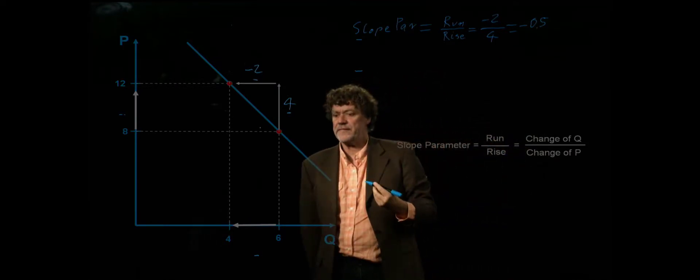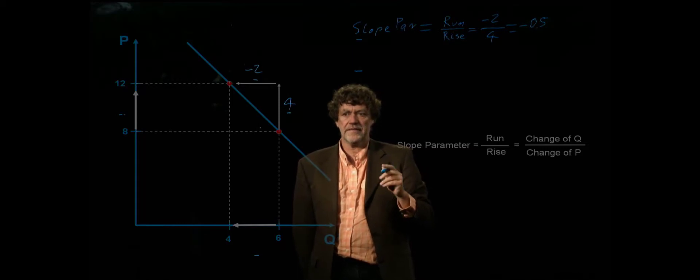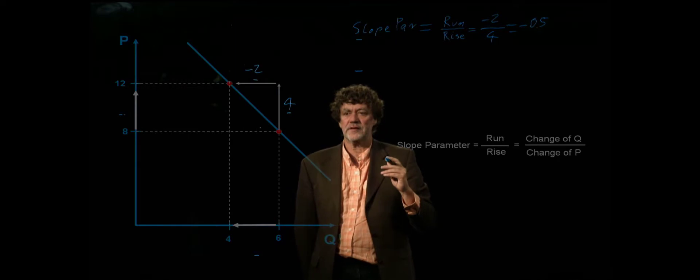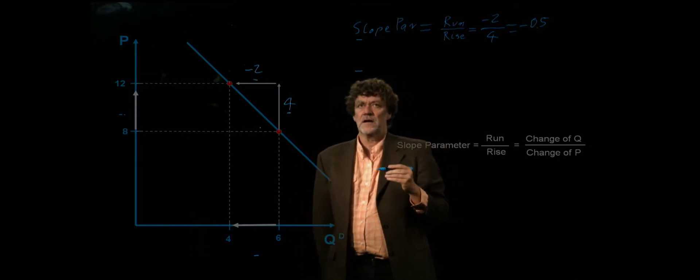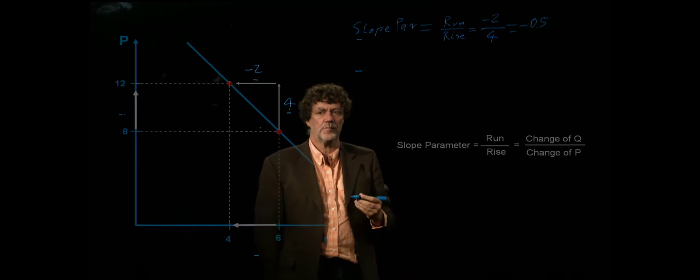That means if the price increases by 1 dollar, then the quantity demanded will decrease by half a unit. How do we calculate elasticity and what is the difference compared to slope?